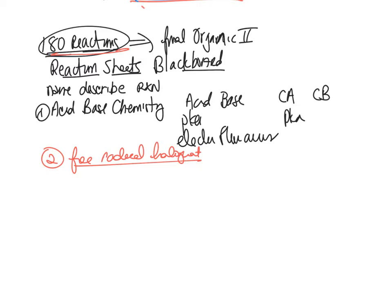Let's go ahead and start with the reaction. I'll give you an example of a reaction, and we'll start there and then work through the Pogel. So, halogenation — what are your halogens? Look at your periodic table.